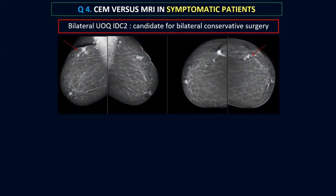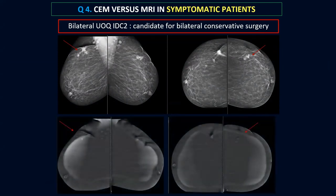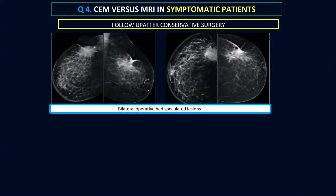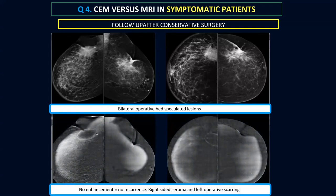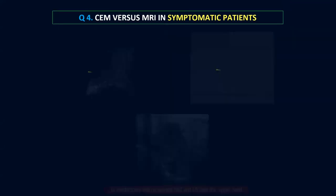Another case: bilateral upper outer quadrant mass lesions — said to be a good candidate for conservative surgery. Pre-operative contrast mammography revealed underlying small enhancing symmetrical lesions in both upper outer quadrants. When she came for follow-up, the mammogram showed apparently spiculated lesions bilaterally, but on contrast mammography there was no underlying enhancement. On the right side, she had an operative bed seroma with a thin enhancing rim — indicating a simple operative bed seroma, not recurrence. There was no recurrence in either breast.